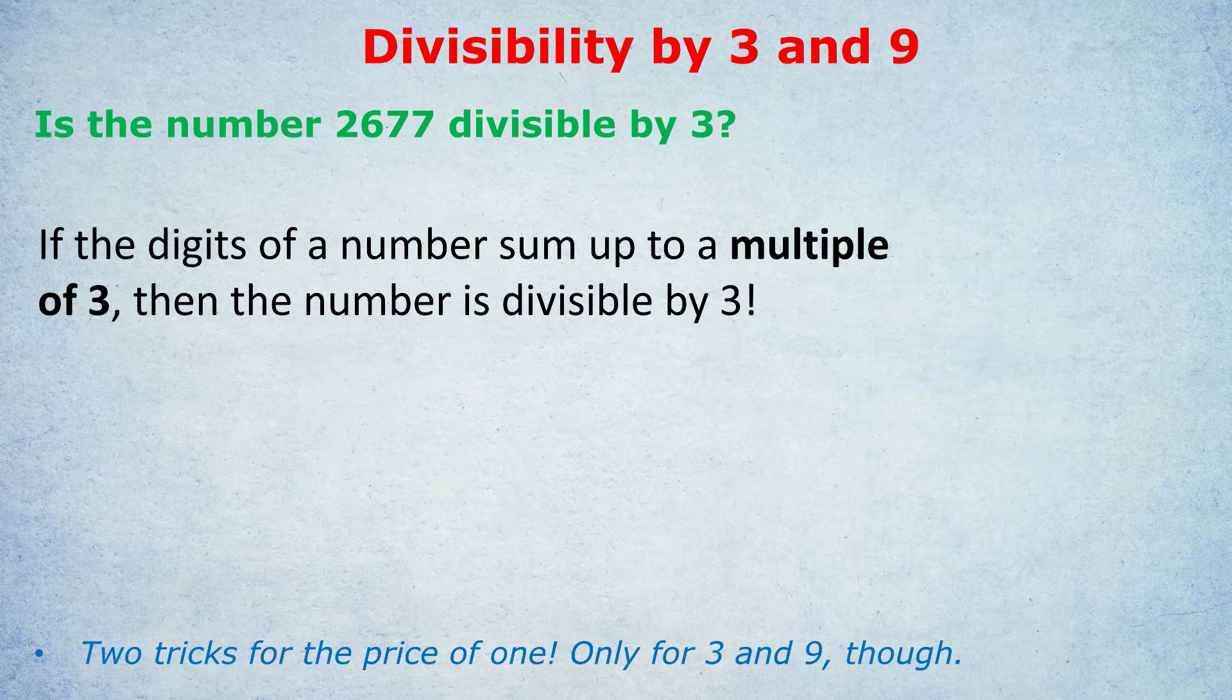Check if I'm right. If it is 22, 22 is not a multiple of 3. That would be 21 or 24. And therefore, 2677 is not divisible by 3, because 22 is not a multiple of 3.